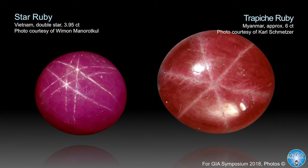You have trapiche rubies — you probably know them — that means stars with a fixed segmentation: no star in reflected light, no star in transmitted light, just a segmentation. This is from Mogok, Burma. They are mostly very small, so it's difficult to put them in jewelry — not like fish-tail emeralds which can make a lot of beautiful jewelry pieces.